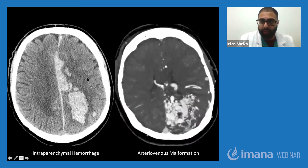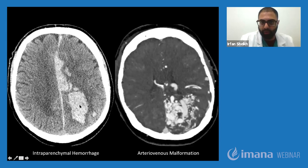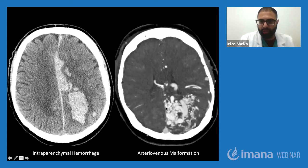CT brain images show intracranial hemorrhage — specifically intraparenchymal hemorrhage — as bright areas, since blood appears hyperdense. On the left side of the brain, you can see high-density fluid which is blood, pushing the brain to the opposite side, causing compression symptoms. The right image shows an arteriovenous malformation — an abnormal collection of arteries and veins that looks like a bag of worms. Both are my own patients seen recently. One patient came in with a very large arteriovenous malformation with minimal symptoms, but she hemorrhaged a couple of days into our service.